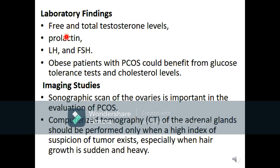Laboratory tests include free and total testosterone, prolactin, LH, and FSH. Obese women with PCOS could benefit from a glucose tolerance test and cholesterol level assessment. Imaging: sonographic scan of the ovaries is important to evaluate PCOS, the most common ovarian cause of hirsutism. CT scan or MRI of the adrenal glands should be performed only when there is high suspicion of a tumor, especially when hair growth is sudden and heavy.